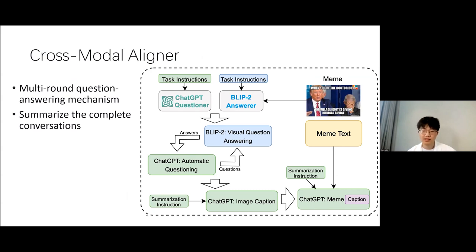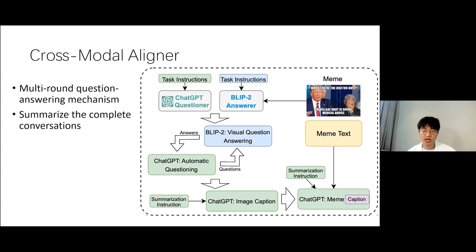Given that ChatGPT lacks the ability to perceive or interpret visual elements within a meme, our approach involves employing BLIP2 as a question-answering system, to which we provide the specific visual content in question. Following the conversation, ChatGPT is directed to condense the discourse into a concise summary referred to as the image description. This summary, along with the textual content of the meme, is subsequently inputted into ChatGPT once more, enabling the generation of the informative image caption.